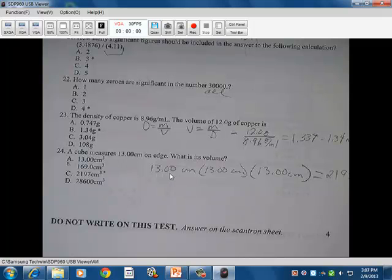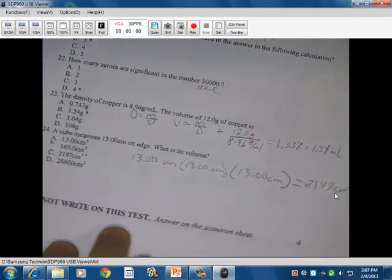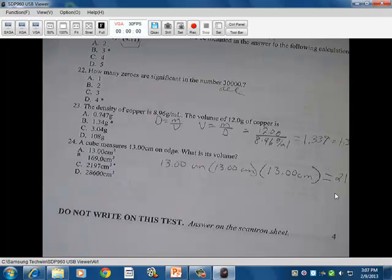24, a cube measuring 13 centimeters on the edge. What's the volume? So you have 13 times 13 times 13 centimeters, which is the 2,197 centimeters cubed because there's three of them. So that then is answer C there.